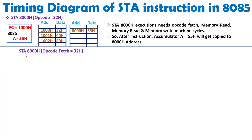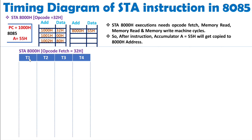The opcode fetch occurs at memory location 1000h and its data is 32h. You should know that opcode fetch has 4 T-states — that is, 4 clock cycles: T1, T2, T3, and T4.